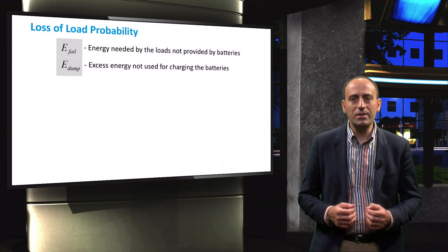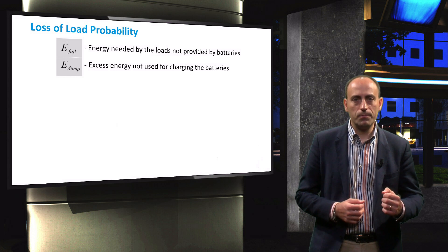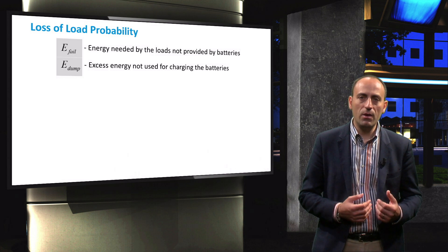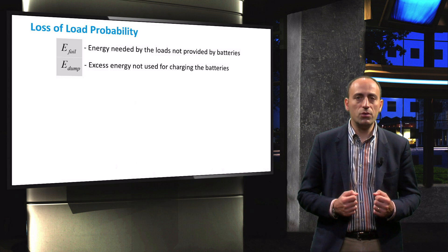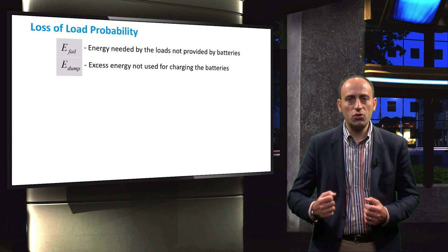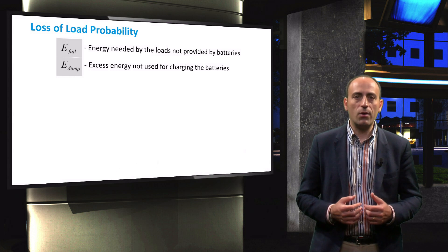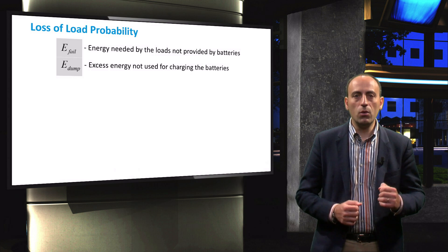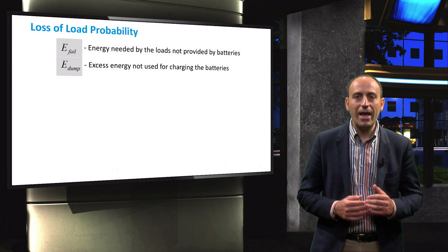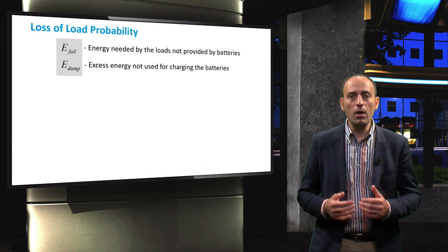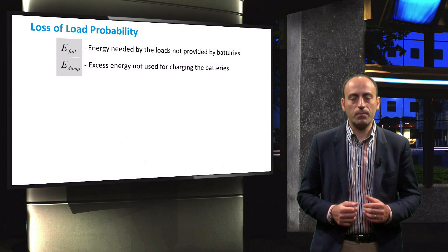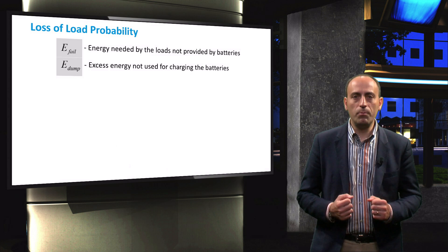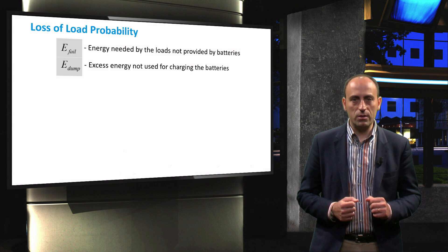The second parameter is E-dump. E-dump is defined as the energy produced by the PV array that is neither used to power a load nor stored in the batteries. This can occur, for example, if the PV generation is greater than the load consumption and the batteries are already full after a number of sunny days. It therefore basically represents the overproduction of the PV array in your PV system.